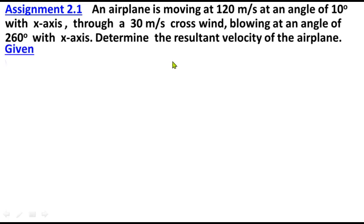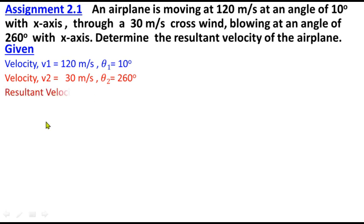Given what we have: velocity V1 equals 120 meters per second and theta 1 is 10 degrees. Velocity V2 is 30 meters per second and the angle is 260 degrees. We need to find the resultant velocity V. What is the solution?